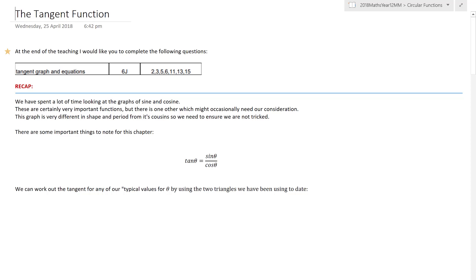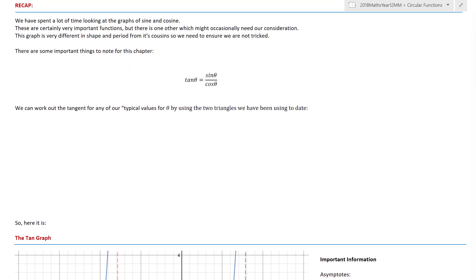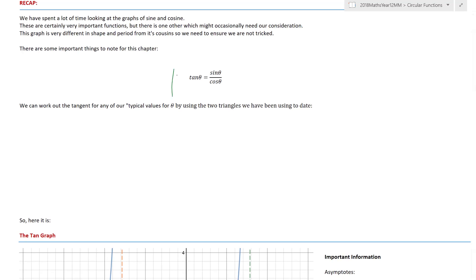Alright, so here is our recap. We've spent lots of time looking at sine and cosine, which are important functions. But one of the things we're going to need to know for this is that tan theta equals sine theta divided by cos theta. That's going to be really important to help us later on manipulate stuff. We can work our tangent for any of our typical values of theta by using the two triangles we've been using today.